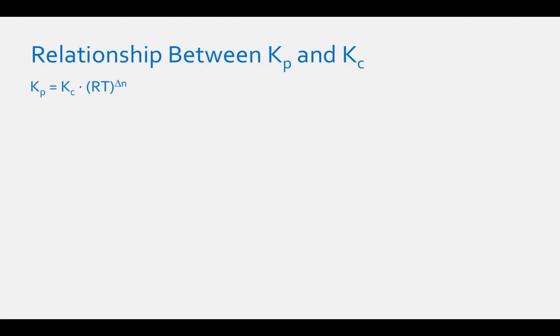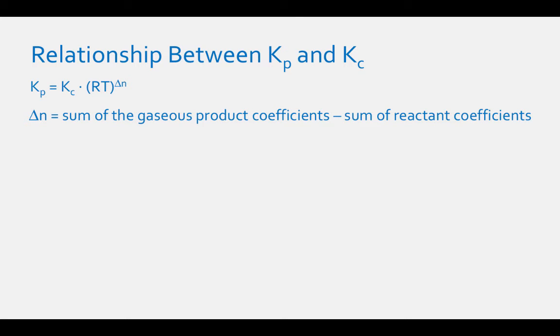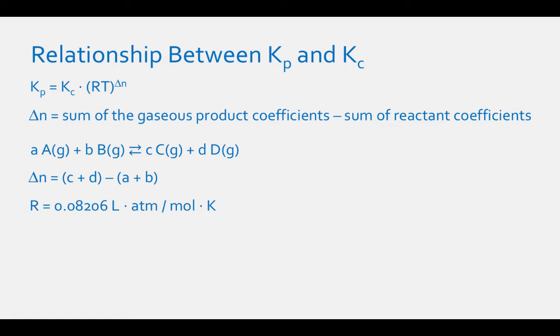The general relationship between Kp and Kc is Kp = Kc × (RT)^ΔN, where ΔN equals the sum of all gaseous product coefficients minus the sum of the gaseous reactant coefficients. For the generic equation AA(g) + BB(g) ⇌ CC(g) + DD(g), ΔN = (c + d) − (a + b). The value of R to use is 0.08206 L·atm/(mol·K), and temperature must be in Kelvin, so that Kp and Kc are unitless.